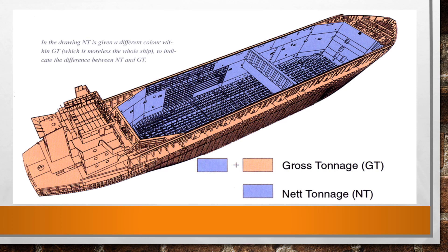We come now to net register tonnage. In the picture here, you can see which areas are included in the net register tonnage calculation. The net register tonnage is a non-dimensional number that describes the value of the cargo space. The net register tonnage is derived from the gross tonnage by subtracting the volume of space occupied by the crew, the navigation equipment, the propulsion equipment, and any workshops or ballast tanks.